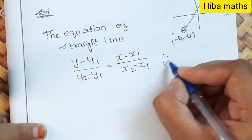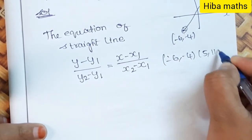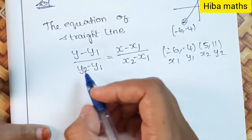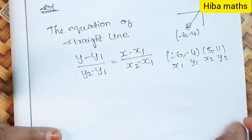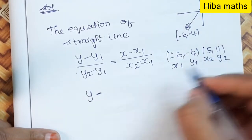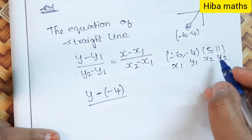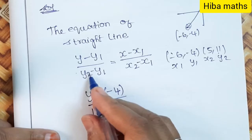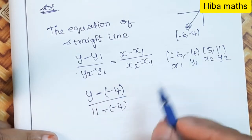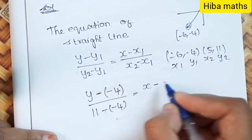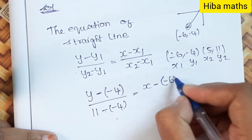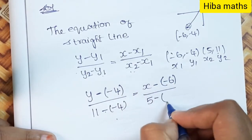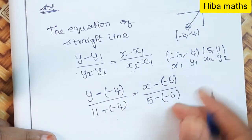We have two points: (-6, -4) and (5, 11). So x1 is -6, y1 is -4, x2 is 5, y2 is 11. Substituting: y minus y1 gives y minus (-4), which is y plus 4. y2 minus y1 gives 11 minus (-4). x minus x1 gives x minus (-6), which is x plus 6. x2 minus x1 gives 5 minus (-6).